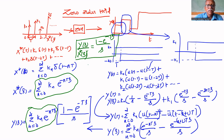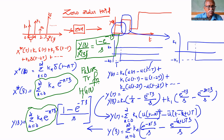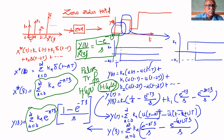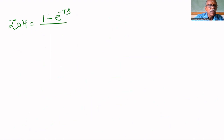This is the zero order hold. That's why, while finding the pulse transfer function, H_GP of S is the pulse transfer function. So H equals Y(S) by X*(S) equals 1 minus e power minus Ts divided by S. That's why we are multiplying the transfer function by 1 minus e power minus Ts upon S. Therefore, the transfer function of zero order hold equals 1 minus e power minus Ts upon S.